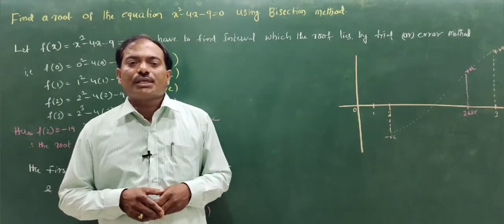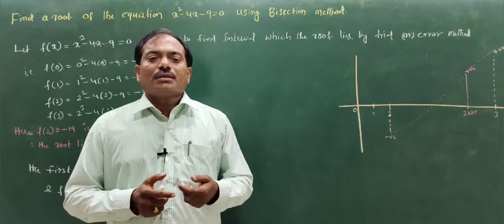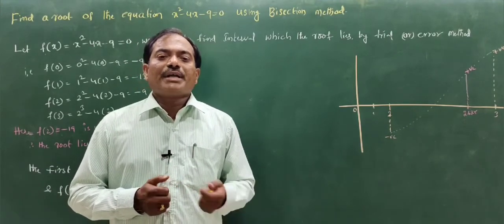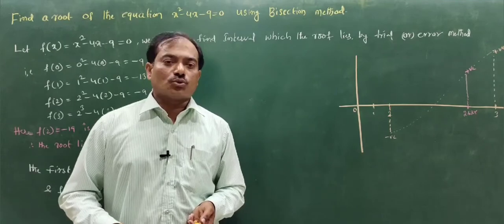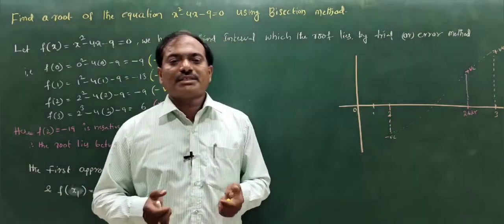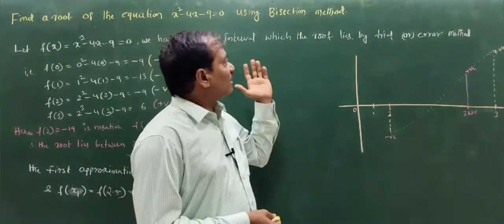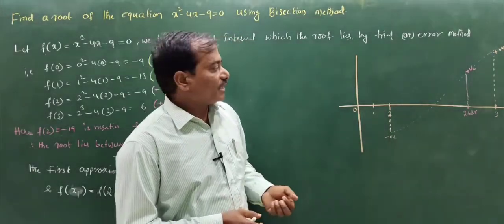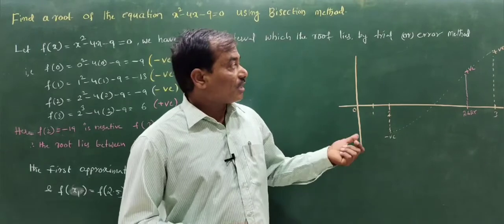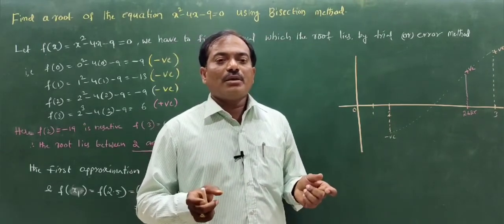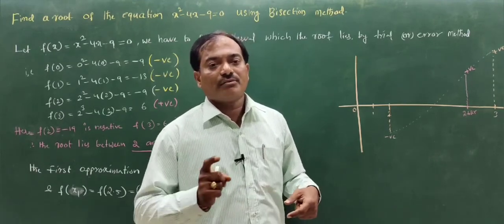In the last class we covered the bisection method. The bisection method is used to find solutions — or roots — of algebraic and transcendental equations. To use it, we find the interval in which the root lies by trial and error: if f(a) and f(b) have opposite signs, then definitely one root lies between a and b.